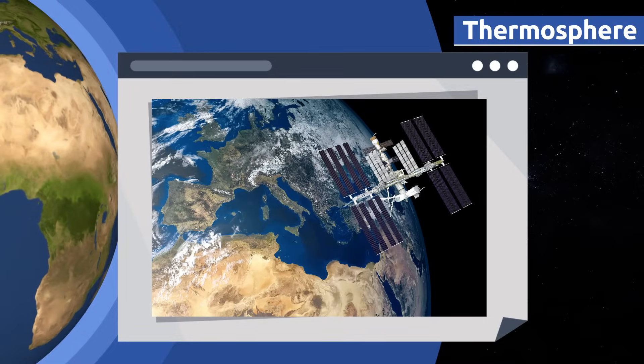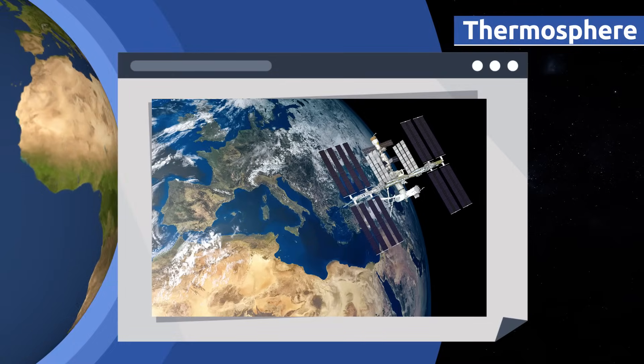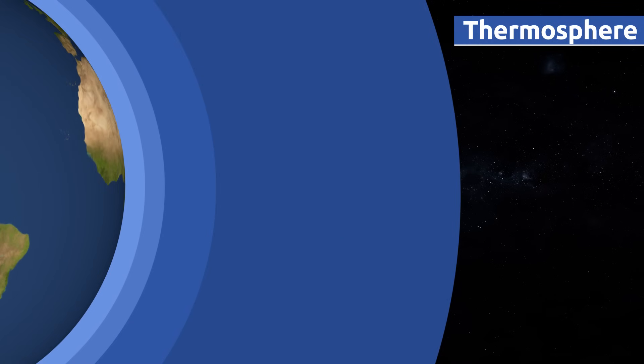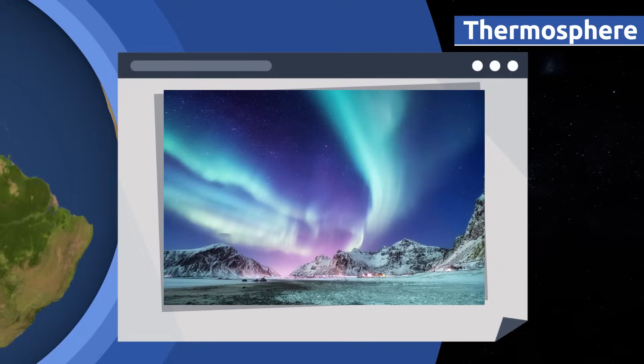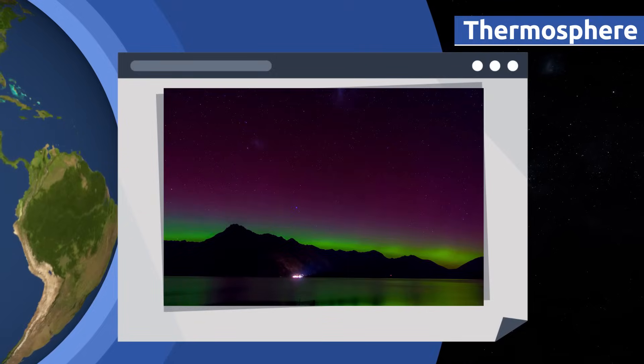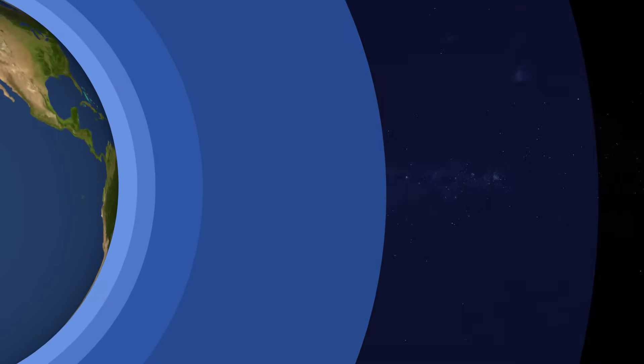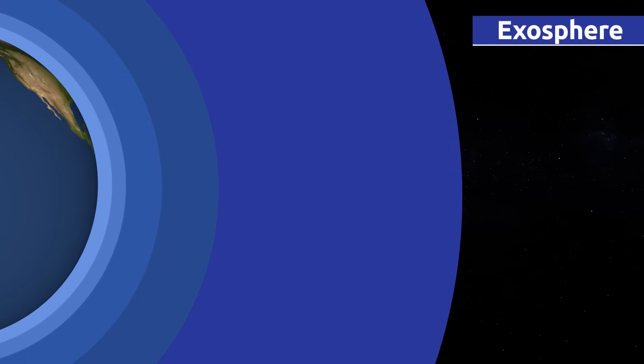The International Space Station orbits the earth within the thermosphere. Impressive natural phenomena like the northern and southern lights occur in the thermosphere. The exosphere is the most distant layer from the earth's surface.